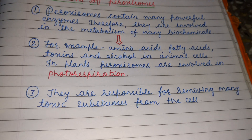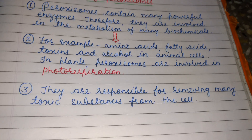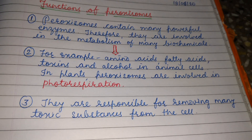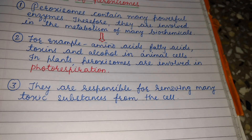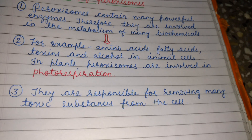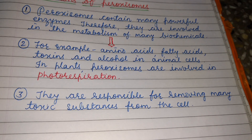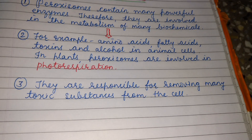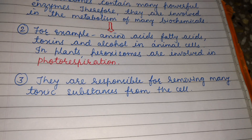In plants, peroxisomes are involved in photorespiration. What is photorespiration? Photorespiration is a respiratory process in higher plants in which they take up oxygen and give out carbon dioxide, which is exactly the reverse process of photosynthesis. As you know, in photosynthesis, by taking carbon dioxide and water, green plants make their own food in the presence of chlorophyll and sunlight to give out oxygen.